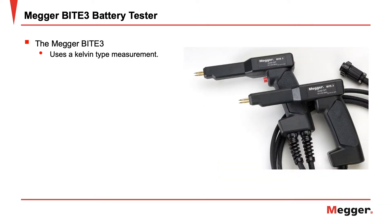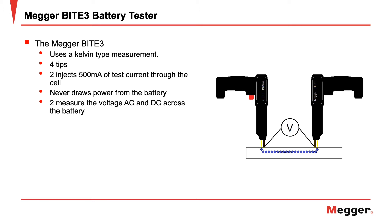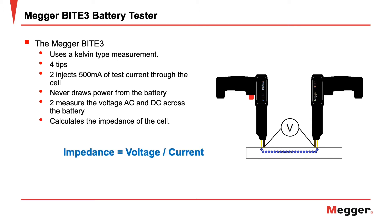The MegaByte 3 uses a Kelvin measurement — a four-connection measurement using a probe with a total of four tips. Two tips inject 500 milliamps of test current through the cell. The unit never draws power from the battery, so it does not discharge the battery. The two other tips then measure the voltage AC and DC across the battery, and the Byte 3 calculates the impedance of the cell.